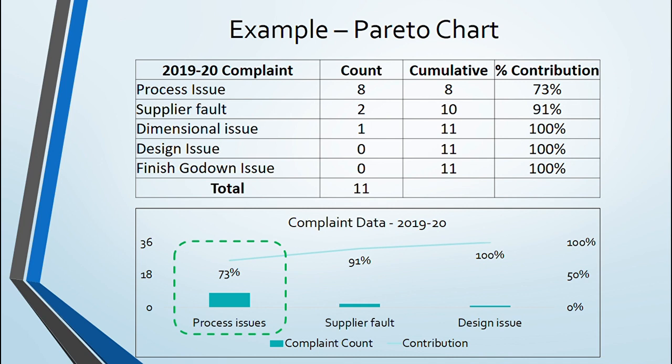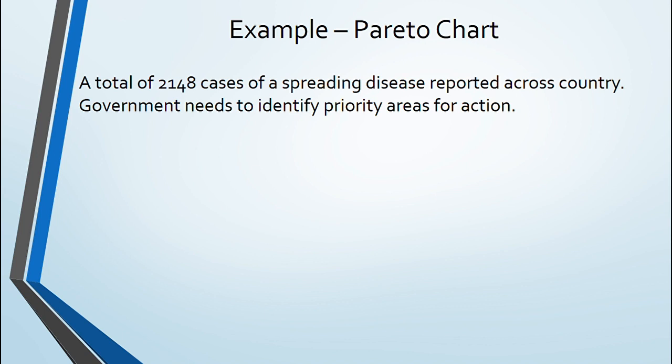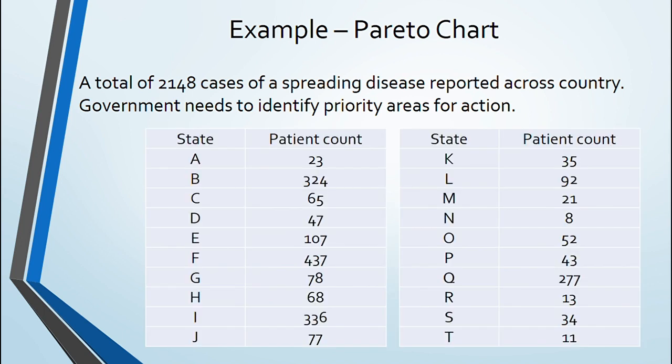Let's take another example. Something we can all relate to in 2020. A total of 2148 cases of a spreading disease reported across country. Government needs to identify priority areas for action. They pulled statewide patient count data.